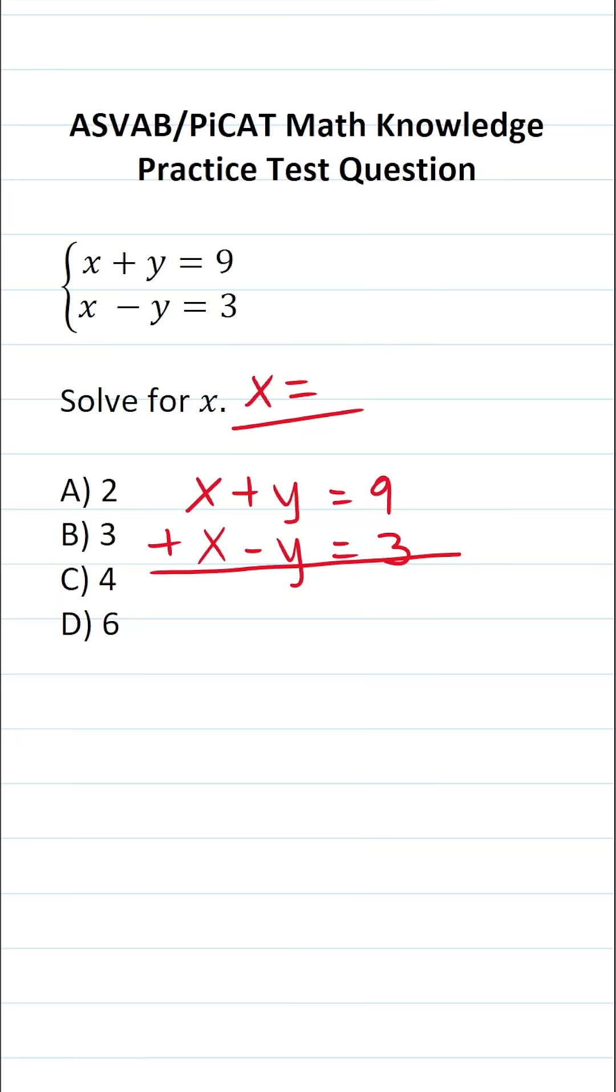What is x plus x? x plus x is going to be 2x. And if it's helpful, you could put a 1 in front of those x's. 1x plus 1x is 2x.